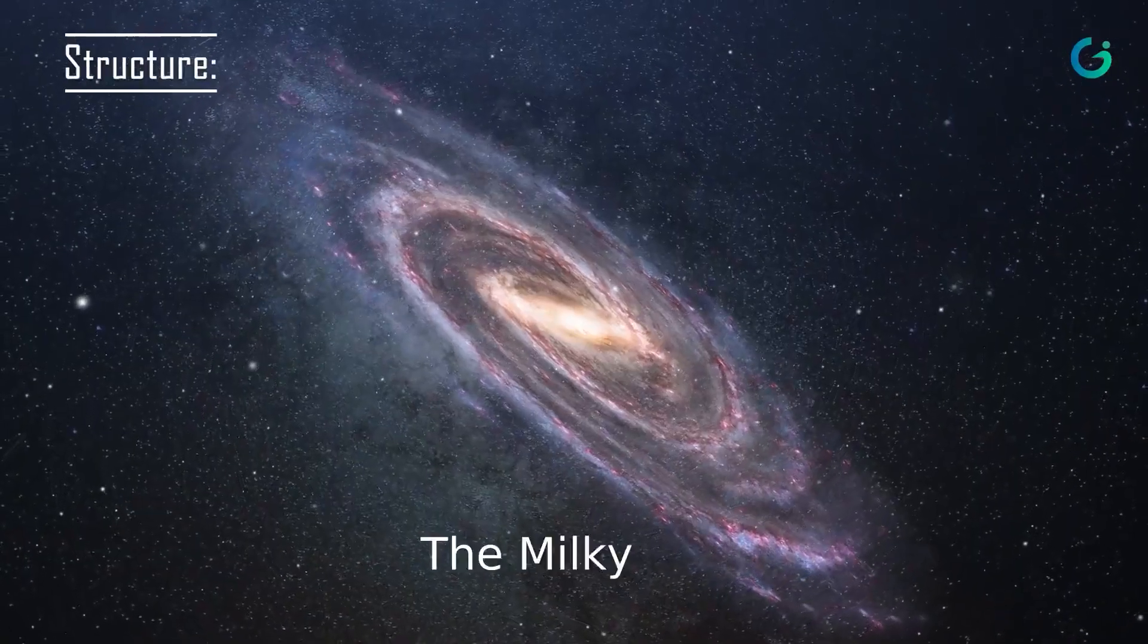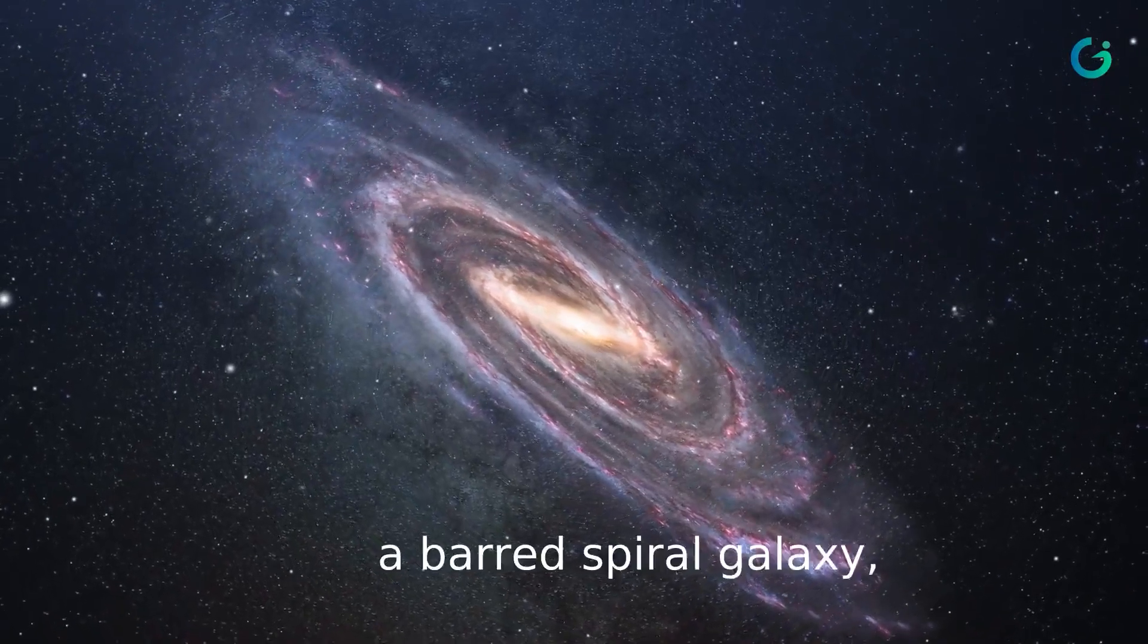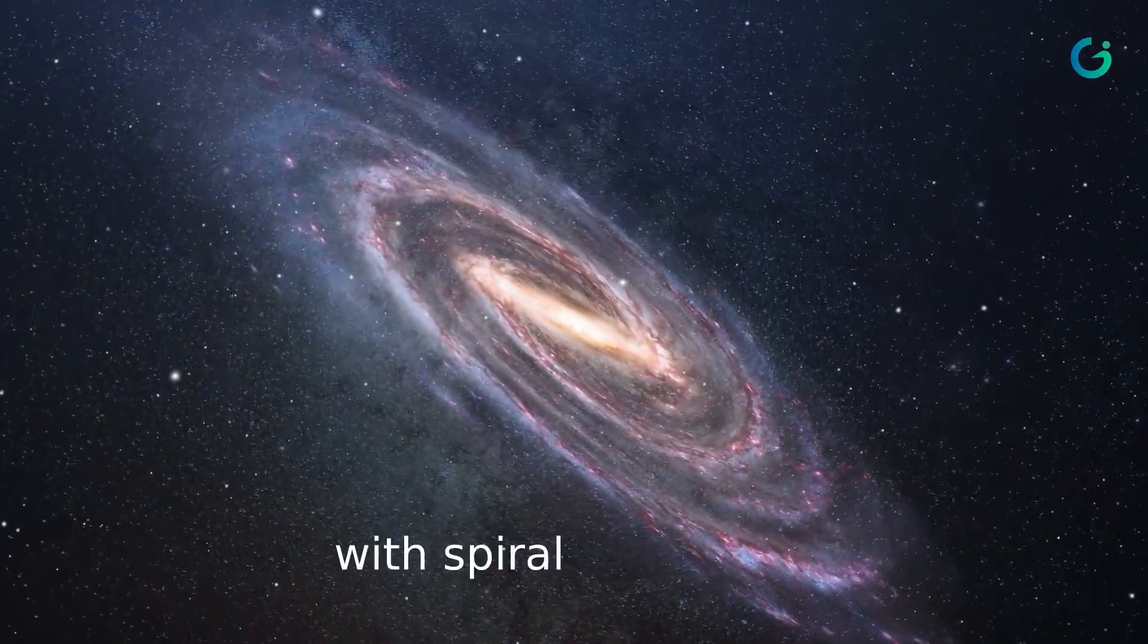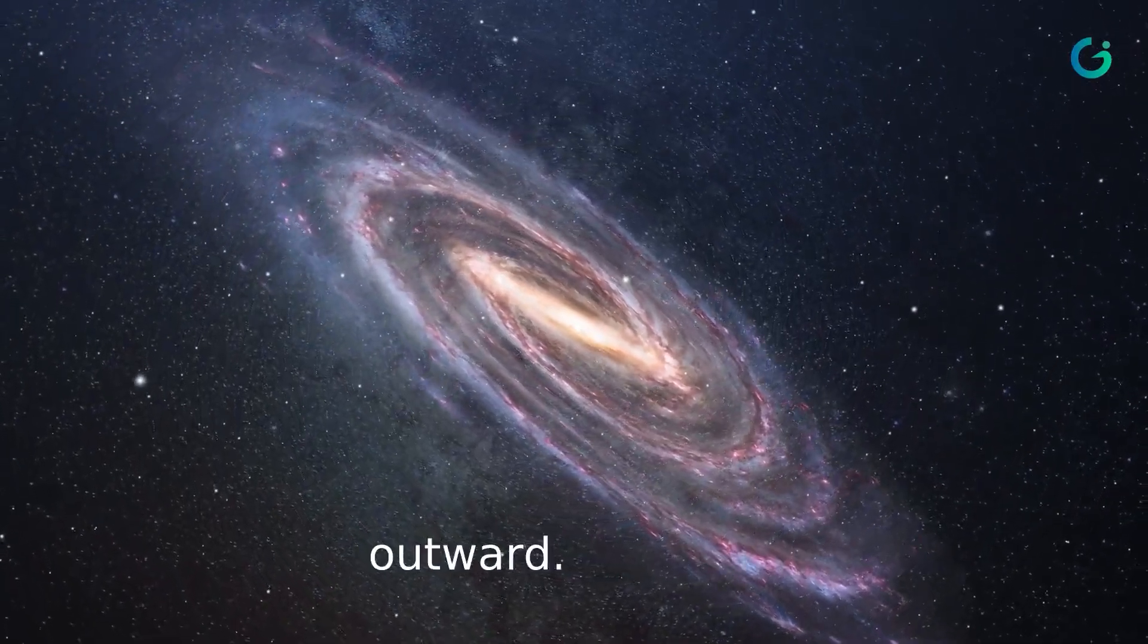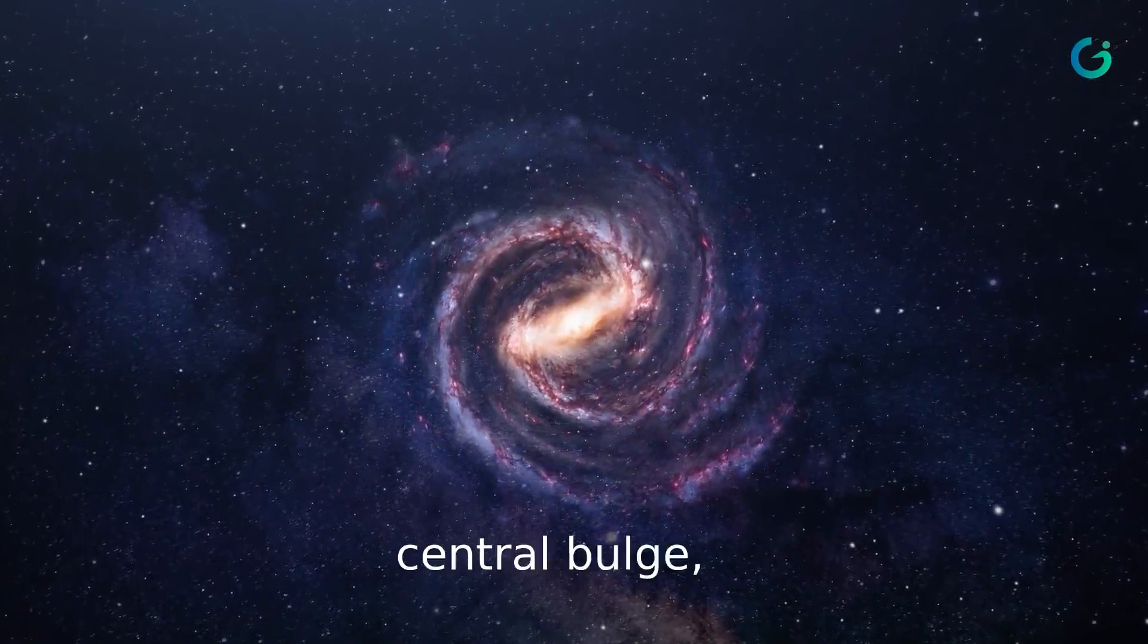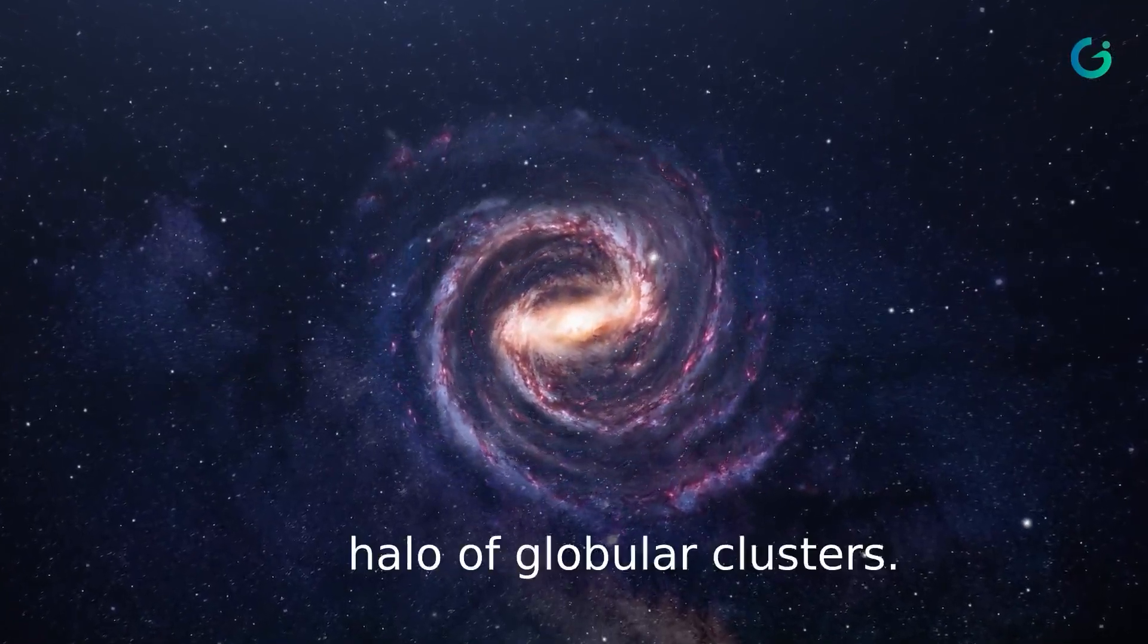The Milky Way is a barred spiral galaxy, meaning it has a central bar-shaped structure with spiral arms extending outward. It consists of a flat disk, a central bulge and a halo of globular clusters.